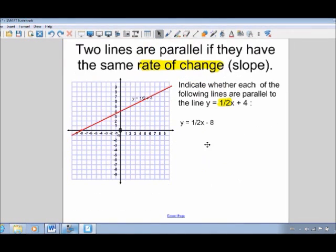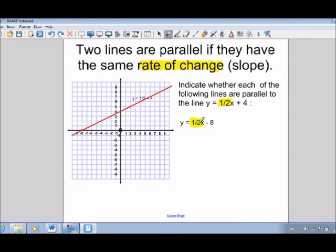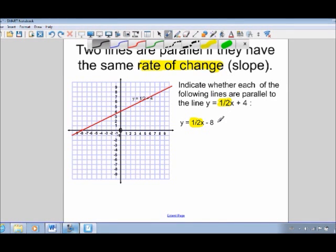All right. First example, y equals one half x minus eight. Well, what's our rate of change here? Again, we take a look at the x, look at the number in front of the x, one half. Does it match? Yes, it does. So simply put, these two lines would be parallel.